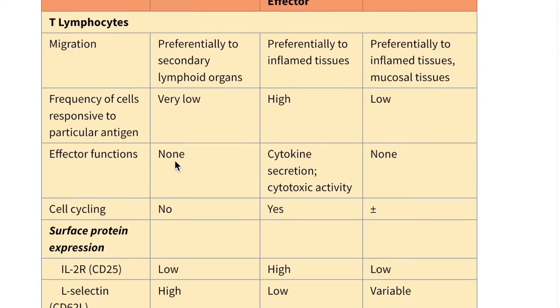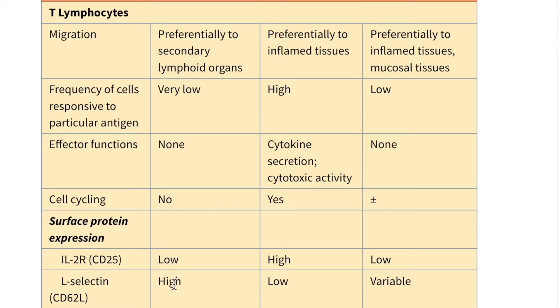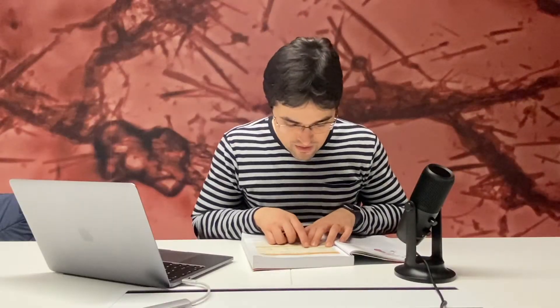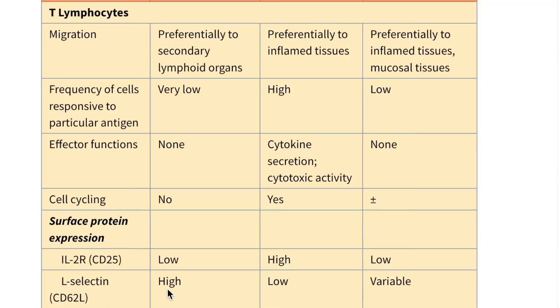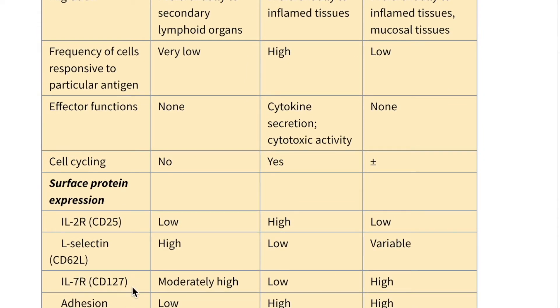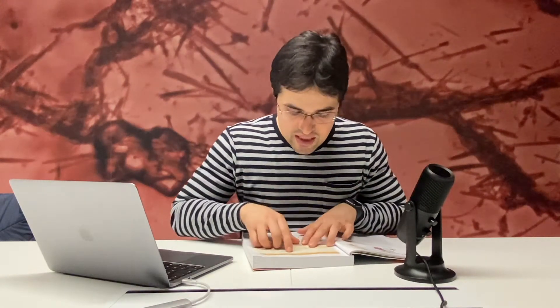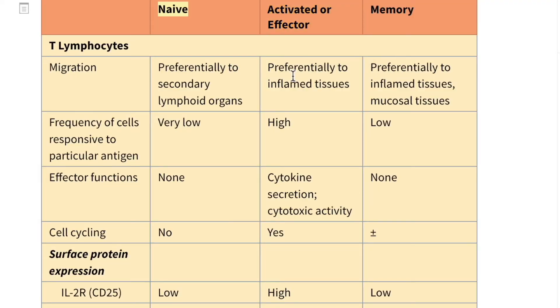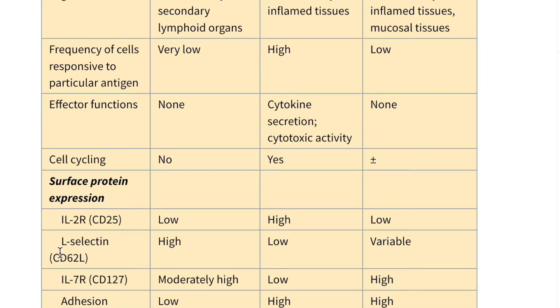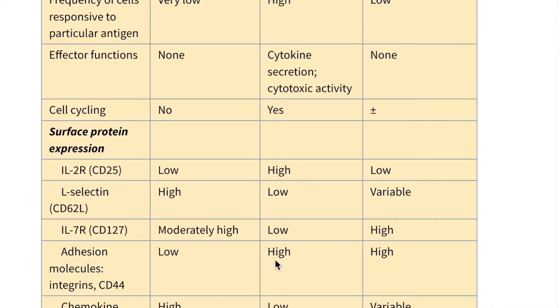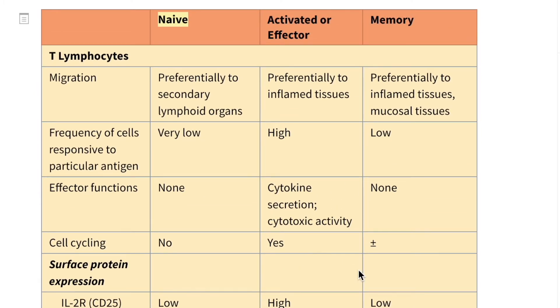For example, the markers of naive lymphocytes: they have low levels of the IL-2 receptor (CD25), but high levels of L-selectin (CD62L), which is the address to go to the lymphoid organs, and relatively high levels of the IL-7 receptor (CD127). The effector lymphocyte has very low levels of L-selectin (CD62L) and very low levels of the IL-7 receptor, but high levels of CD44 — adhesion molecules, mostly integrins — important for finding and infiltrating infected or inflammatory tissues.